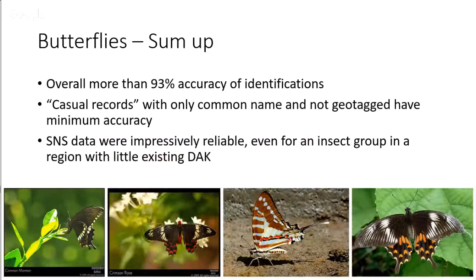To sum up this butterfly study: we found overall more than 93 percent accuracy in identification, which we felt was really good. Casual records with only a common name and non-geotagged did have minimum accuracy. Social networking sites are impressively reliable even for this particular family of insects, and we can get a lot of digital accessible knowledge out of this kind of data source.